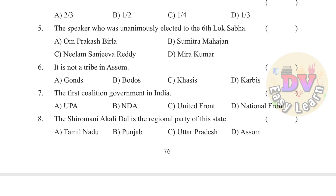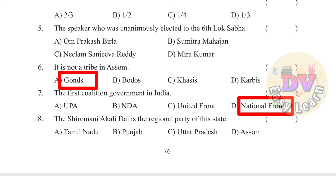Question 6: It is not a tribe in Assam — Answer: Goans. Question 7: The first coalition government in India — Answer: National Front. Question 8: The Shiromani Akali Dal is the regional party of this state.